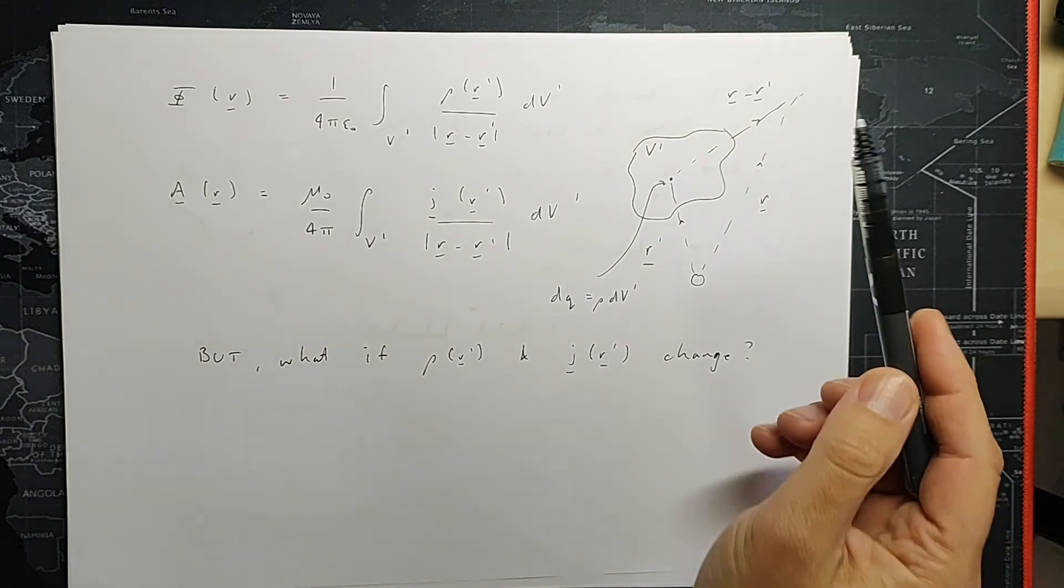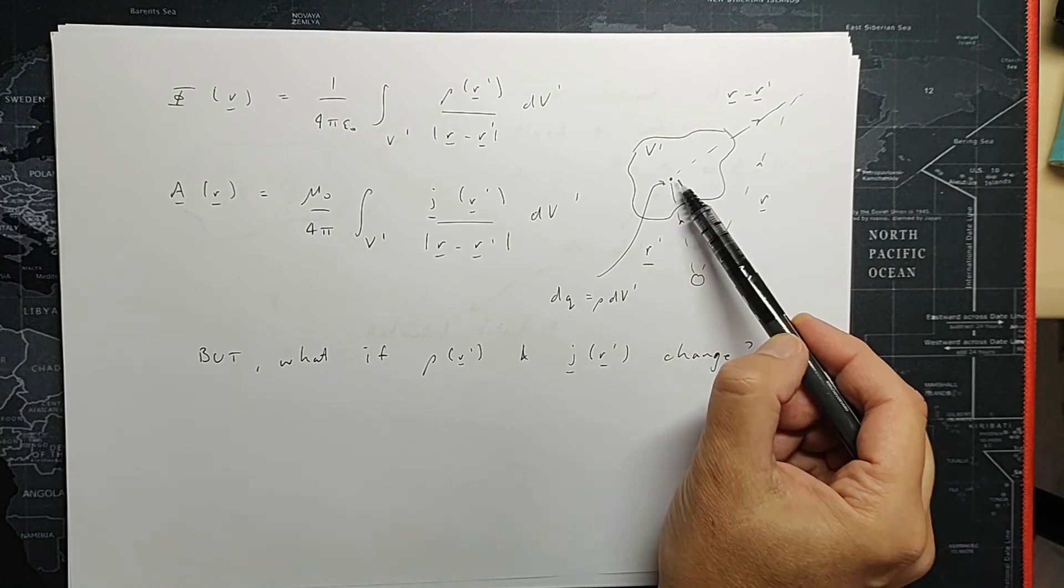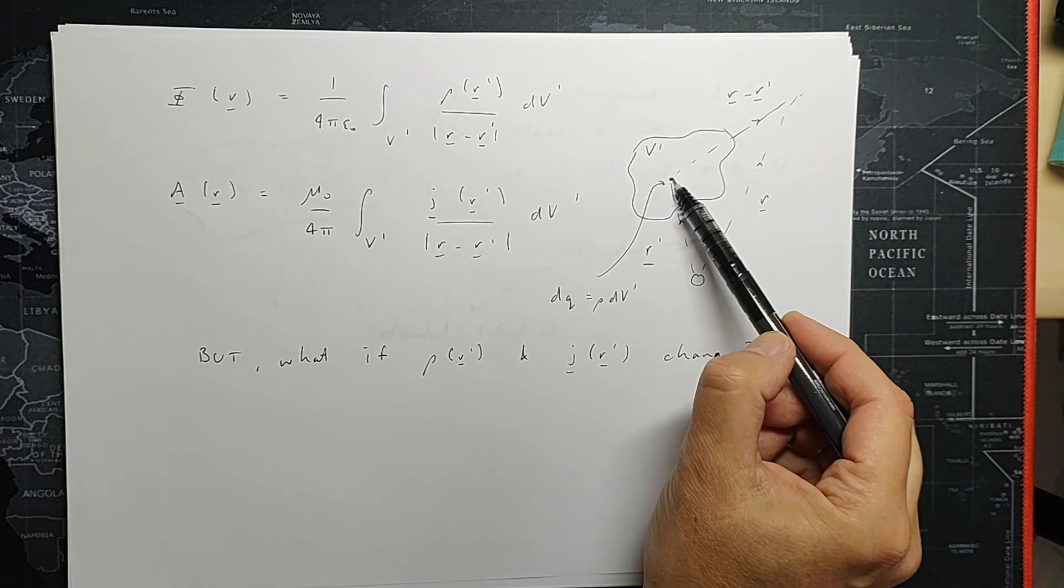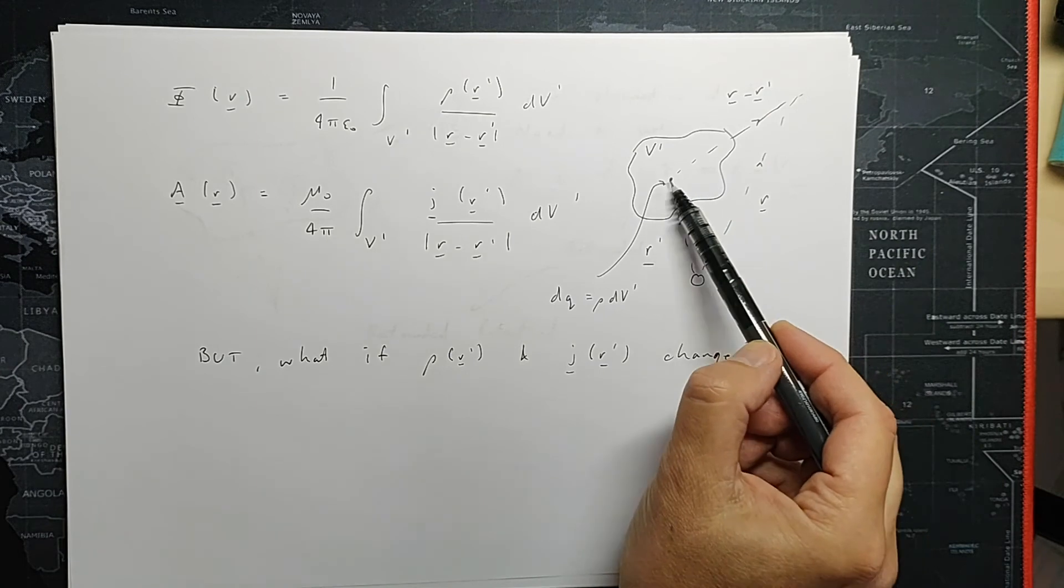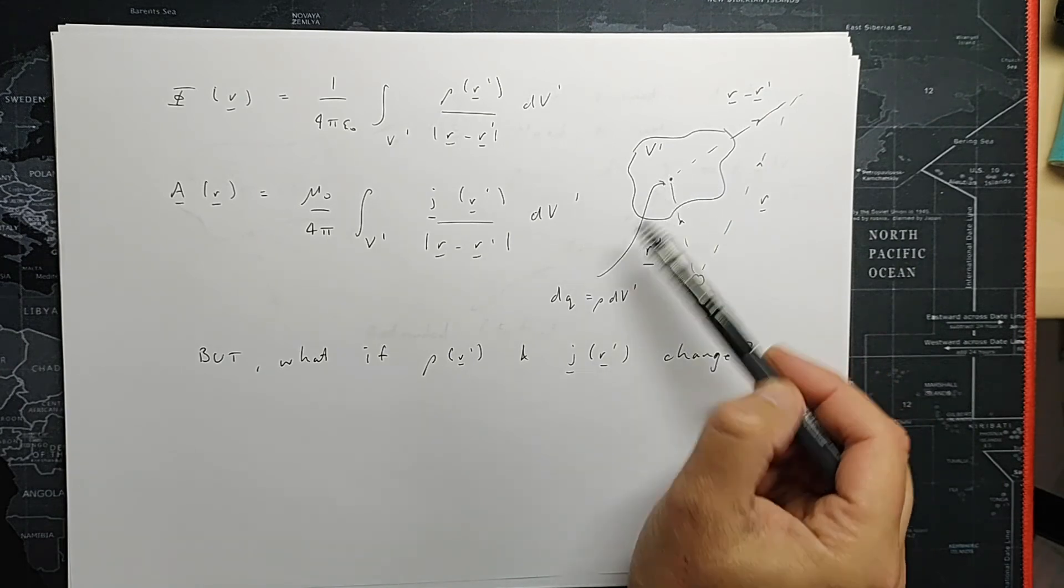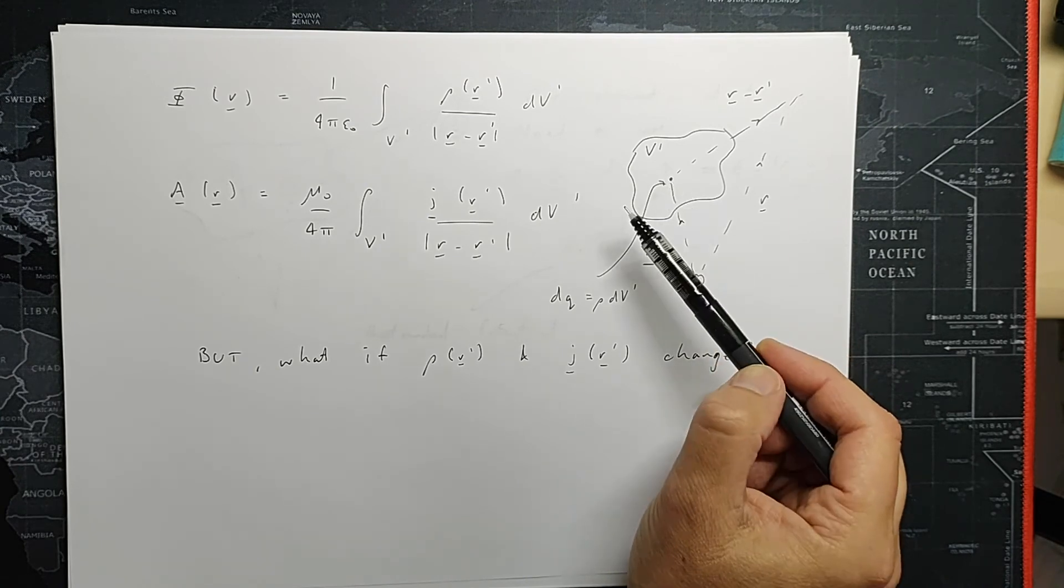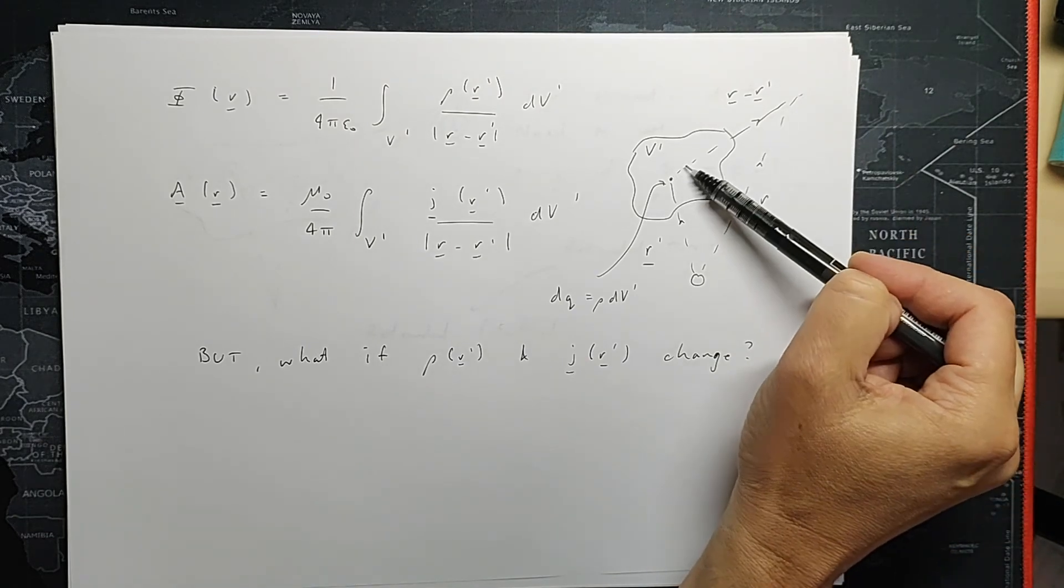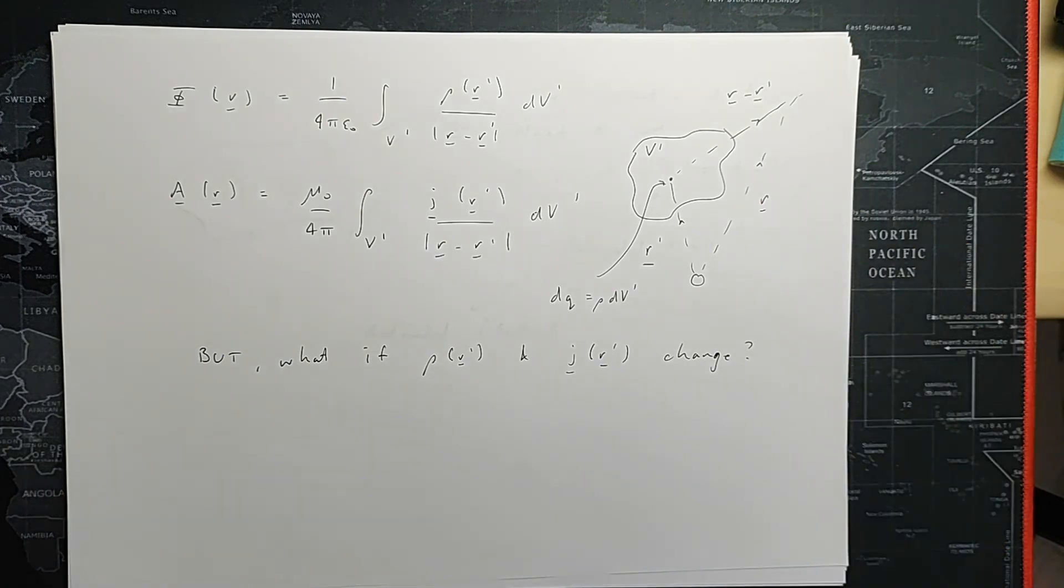Now this is all fine in the static case. But what happens if the charge at this location changes as a function of time? Imagine I'm observing over here and I see a potential due to this piece of charge over here. What happens if this charge moves from this location to somewhere else? Or equivalently, that the charge density of that location has changed? Well, I won't know about it for the amount of time it takes for light to propagate from this location to this location. So that's the difference between a static potential and a dynamic potential.